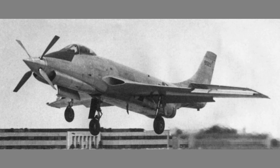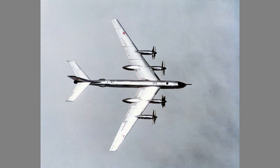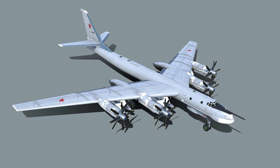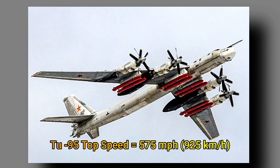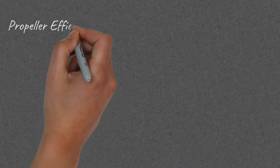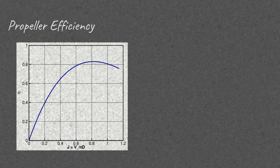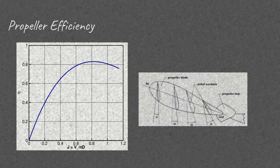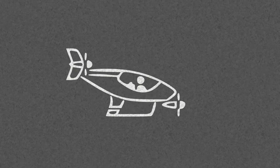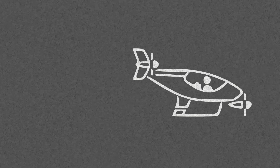That said, there are certain propellers capable of achieving supersonic tip speeds, such as those on the Tupolev TU-95, an aircraft that can reach speeds of up to 575 mph or 925 km/h. The speed at which a propeller achieves peak efficiency depends on the shape and angle of the blades. Therefore, it's important to consider the speed at which the aircraft will travel most of the time and design the propeller accordingly.